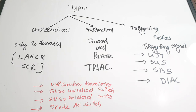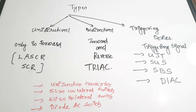So the three main categories are unidirectional, bidirectional, and triggering. Unidirectional and bidirectional types do not require a triggering signal, but the third category does. In this video we covered the basics of the thyristor: its symbol, terminals, layer structure, and types. In the next video we will discuss the characteristics and modes of operation of the thyristor.